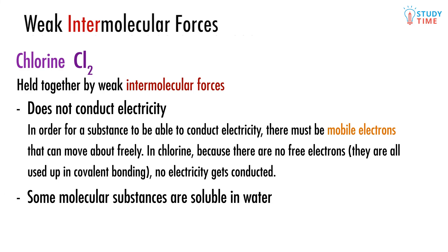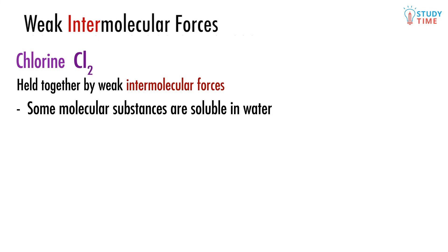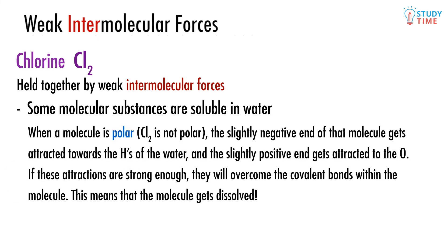Some molecular substances are soluble in water. Chlorine is not one of these, but that doesn't mean it's impossible for a molecular substance to be soluble in water — it all depends on polarity. When a molecule is polar, and Cl2 is not polar, the slightly negative end of that molecule gets attracted towards the hydrogens of the water, and the slightly positive end gets attracted to the oxygen. If these attractions are strong enough, they will overcome the intramolecular forces within the molecule, meaning the molecule gets dissolved.